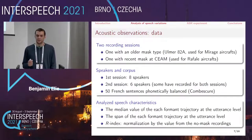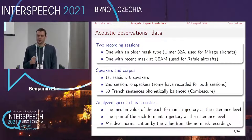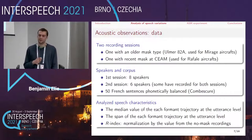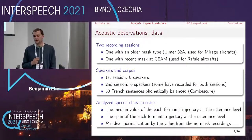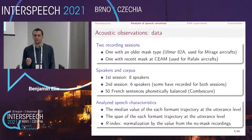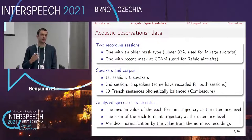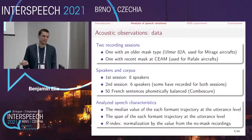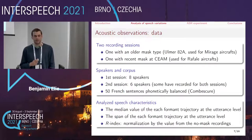We computed, for each formant — F1, F2, and F3 — two features: the median value and the span, which quantifies the amplitude of variation of the trajectory around its mean contour. We then normalized values by dividing by the value obtained for the same sentence and same speaker without the mask. When this index is greater than one, the value has increased in the presence of the oxygen mask; when lower than one, it has decreased.